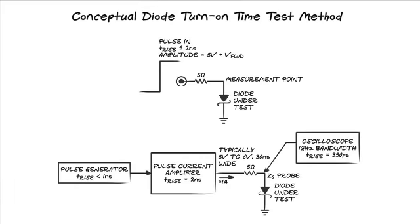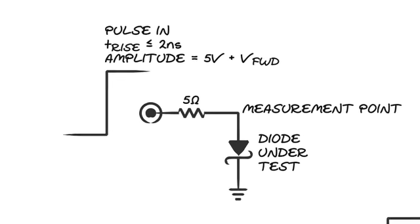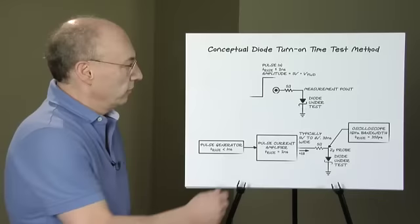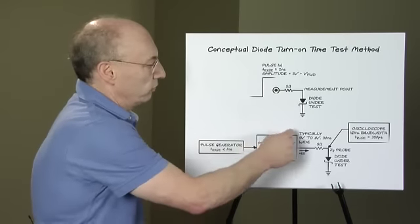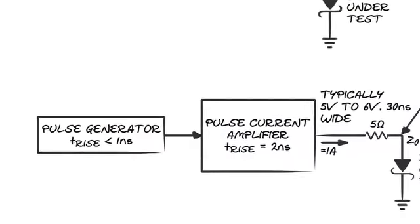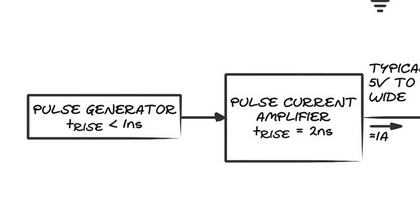You put a four or five volt pulse into five ohms into the grounded diode and you measure how much time it takes the diode to clamp to V-diode. This looks very simple, but instrumenting it gets relatively sticky. The pulse generator has to have sub-nanosecond rise time.